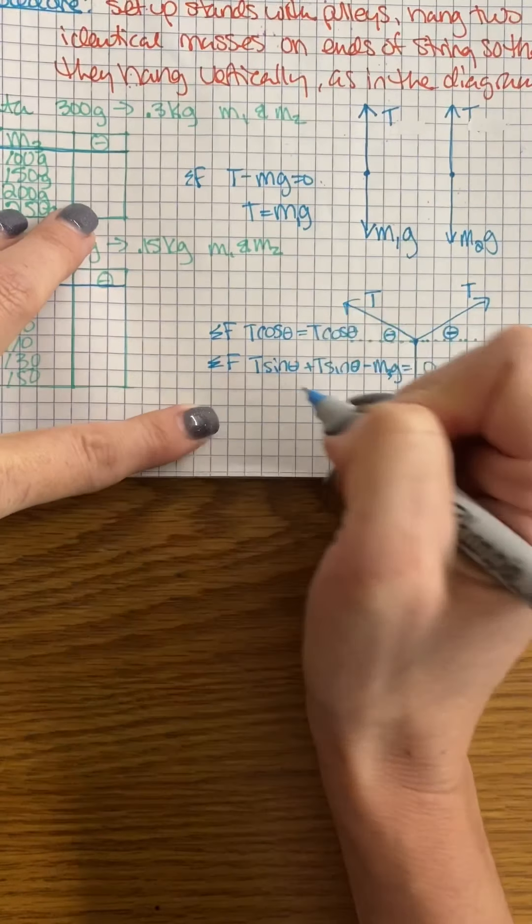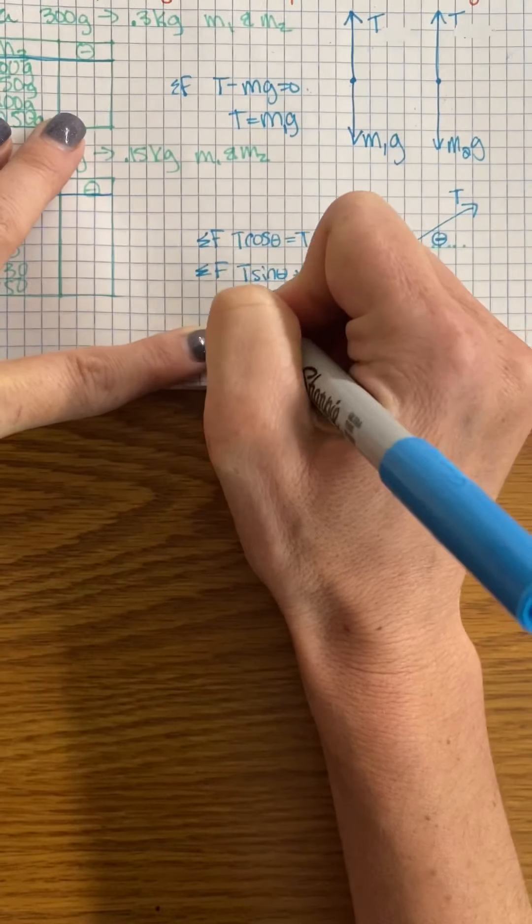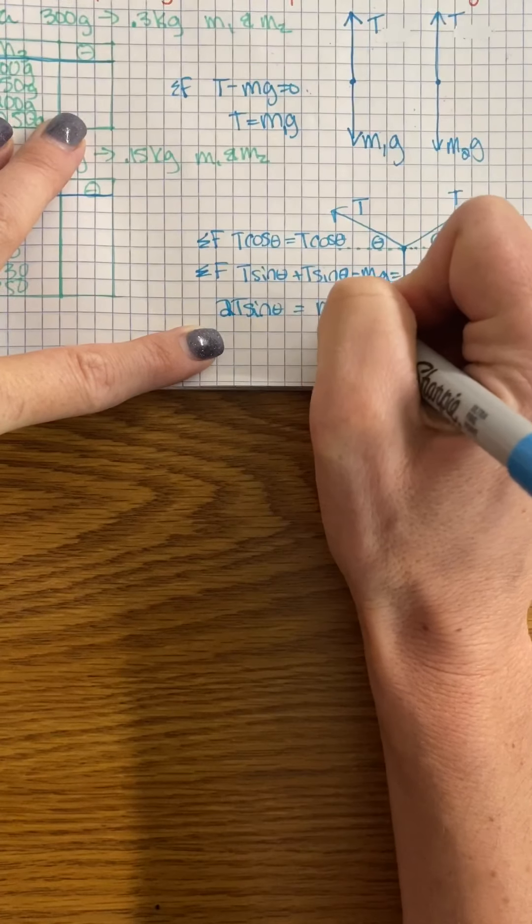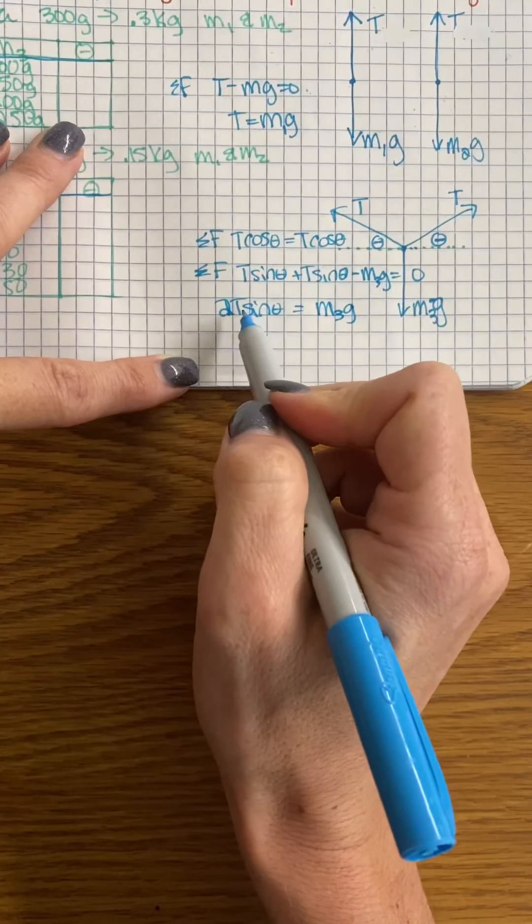Two T sine theta is equal to M3g. I can add these together because they're the same values.